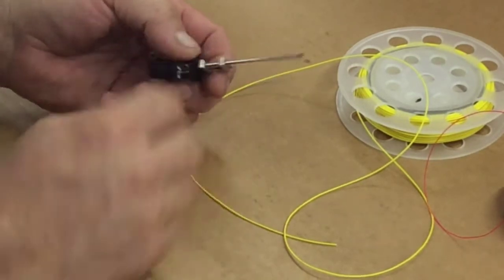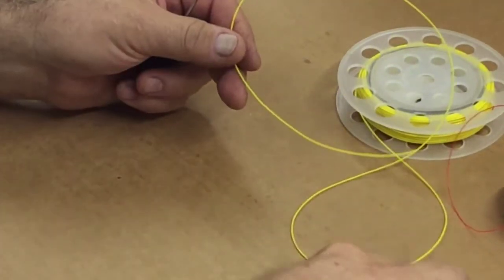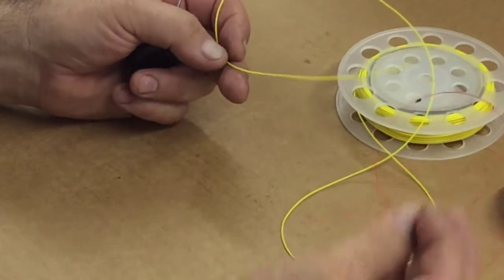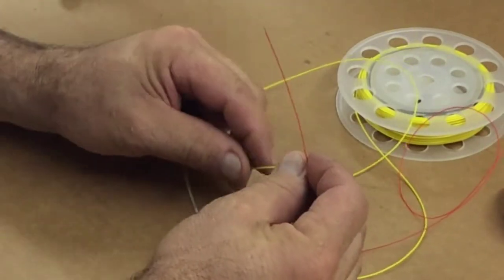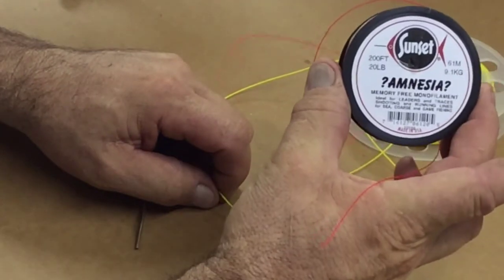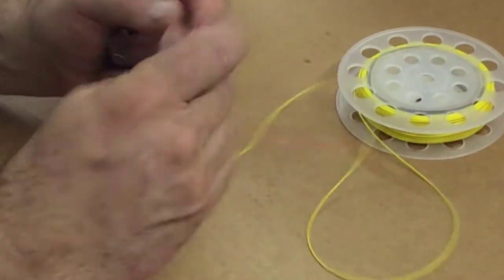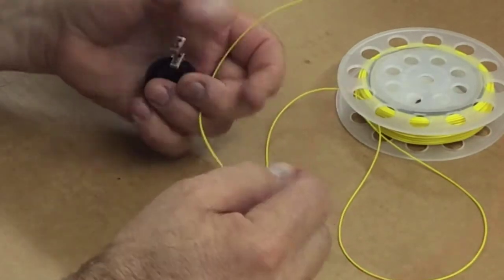So what I have here is some fly line and this is 20 pound test amnesia. This is a monofilament, supposedly a memory free monofilament. It works good for shooting heads. It's cheap and it lasts you a couple of years per spool.